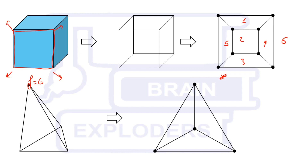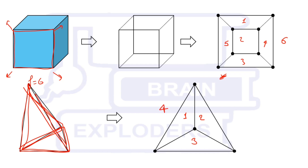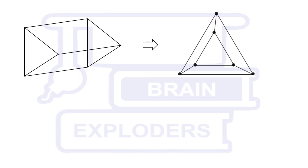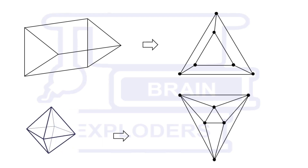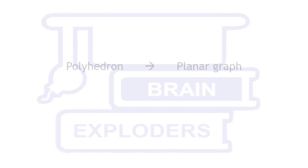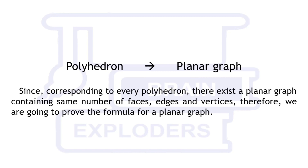Not only this shape but other shapes can also be transformed into planar graphs. This tetrahedron has four faces: the first one, the second, the third at the back, and the fourth at the bottom. But this planar graph only shows three regions, so we take the outer region as the fourth face. In the same way, any polyhedron can be converted into a planar graph. Since all polyhedrons can be represented as planar graphs, we will prove this theorem for planar graphs, which ensures it's true for polyhedrons also.